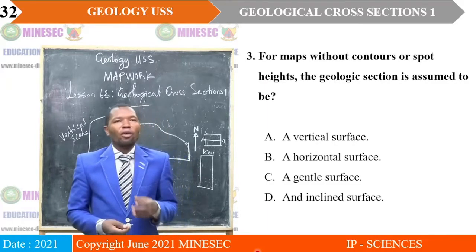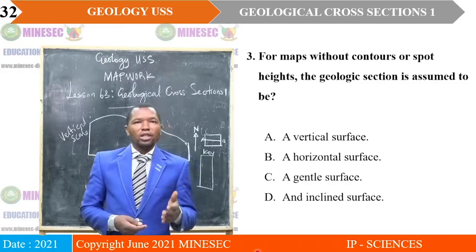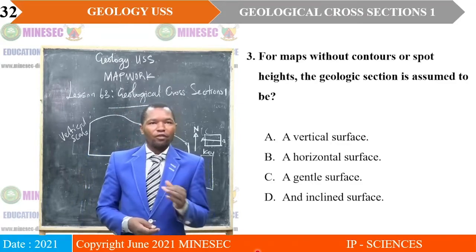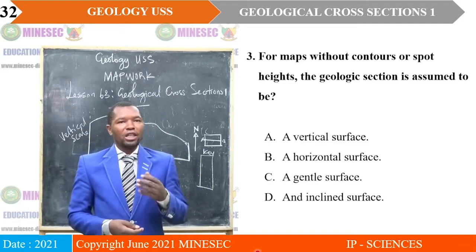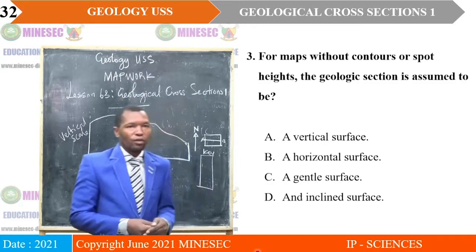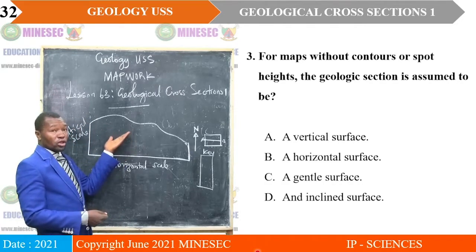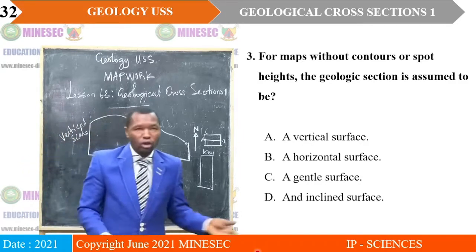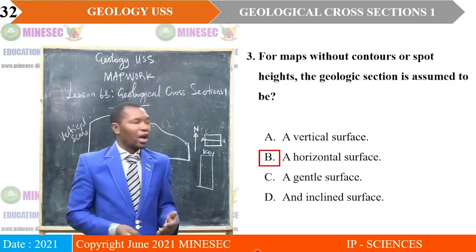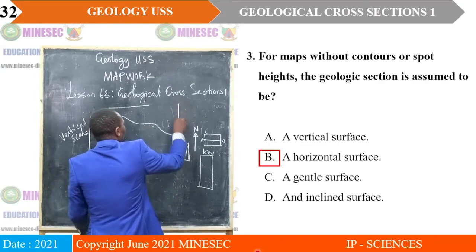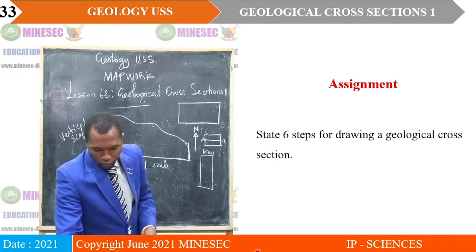Question number three: for maps without contours or spot heights, the geologic section is assumed to be — A: a vertical surface; B: a horizontal surface; C: a gentle surface; D: an inclined surface. The correct answer is B. In cases where you don't have contours at all, the assumption is that the area is a horizontal surface, so the profile is supposed to be flat — you can even draw a box as a profile.